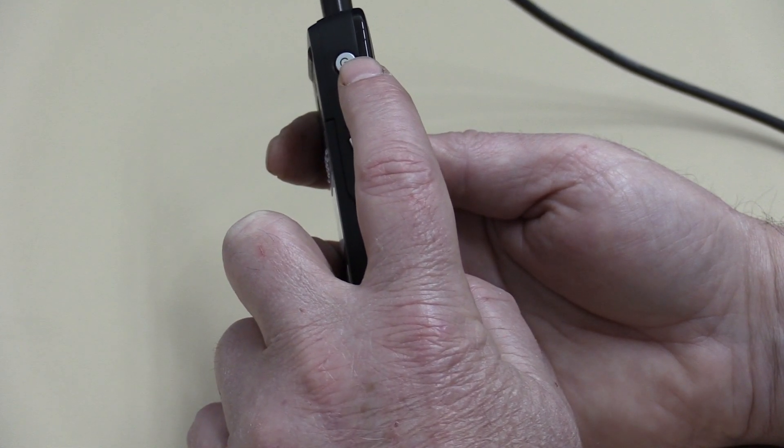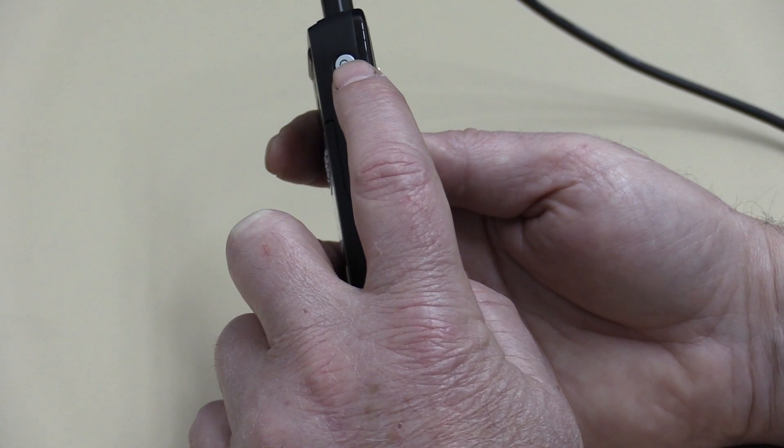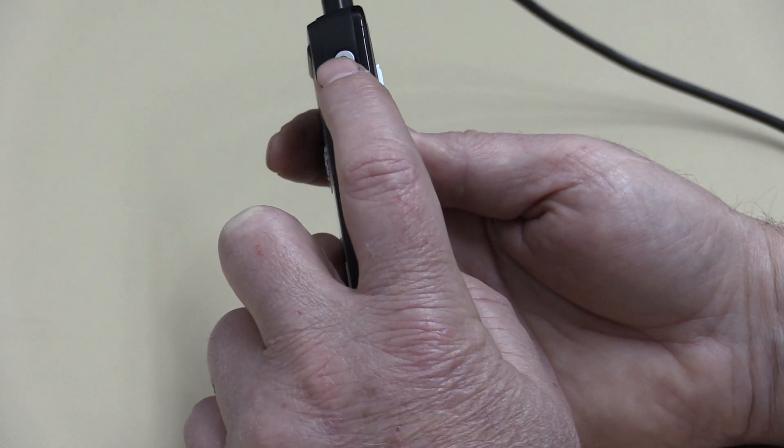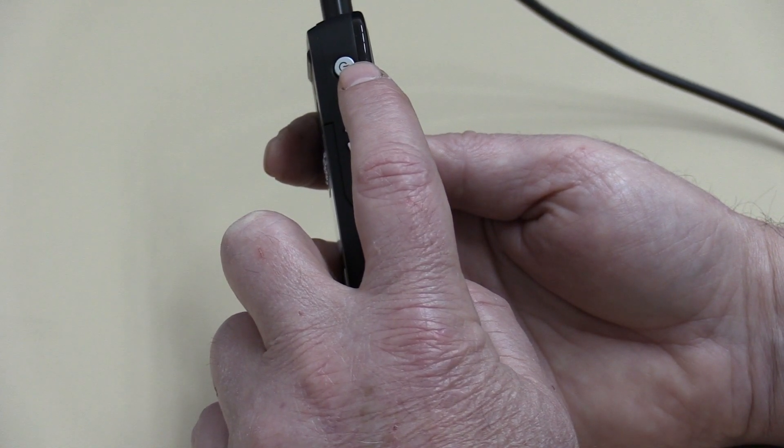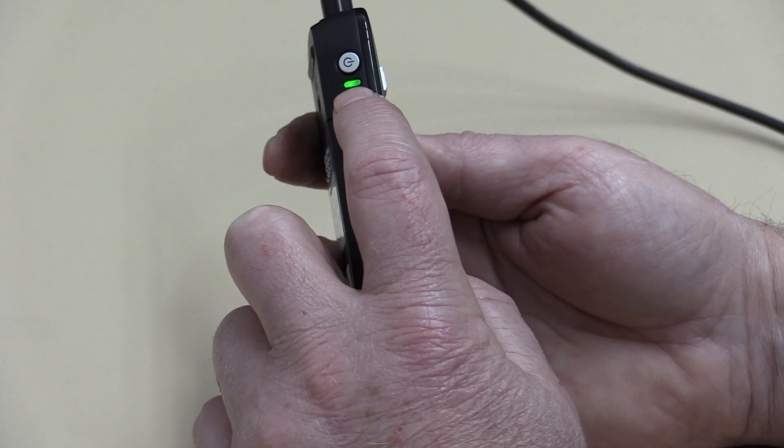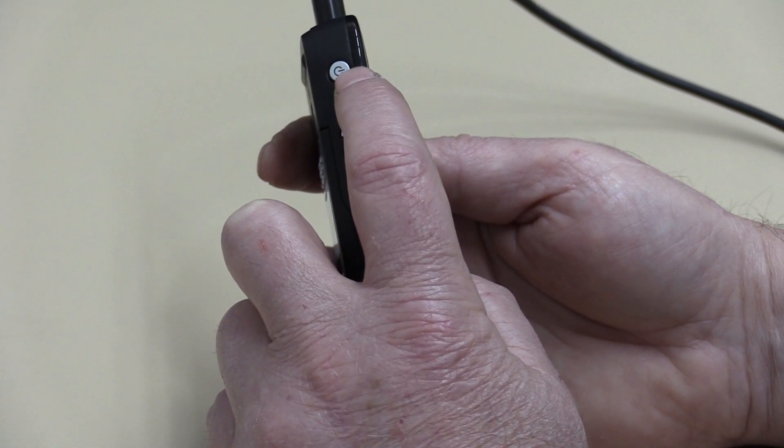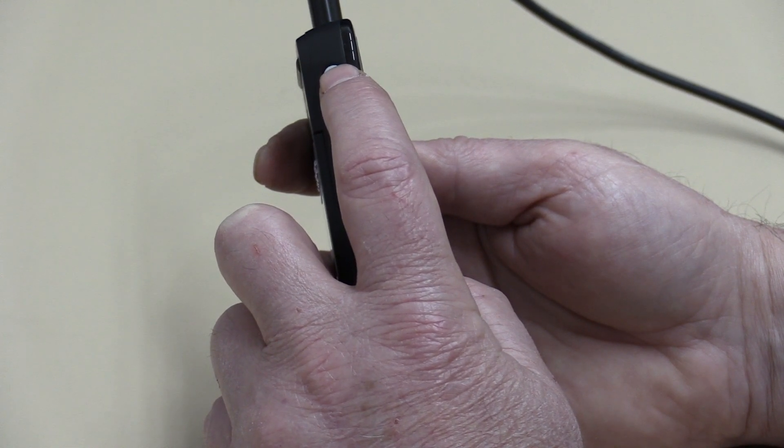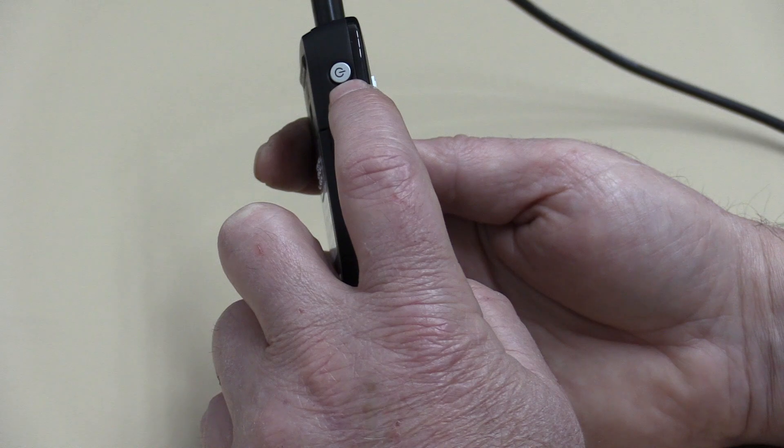If we press the on-off button, now just tapping it, not holding it, because if we hold it it'll turn itself off. So if we just tap it once, it'll cycle through some options. So I'm going to press it once: Speed, Pitch, I'll explain that a little bit further, Volume, and then back to Speed.